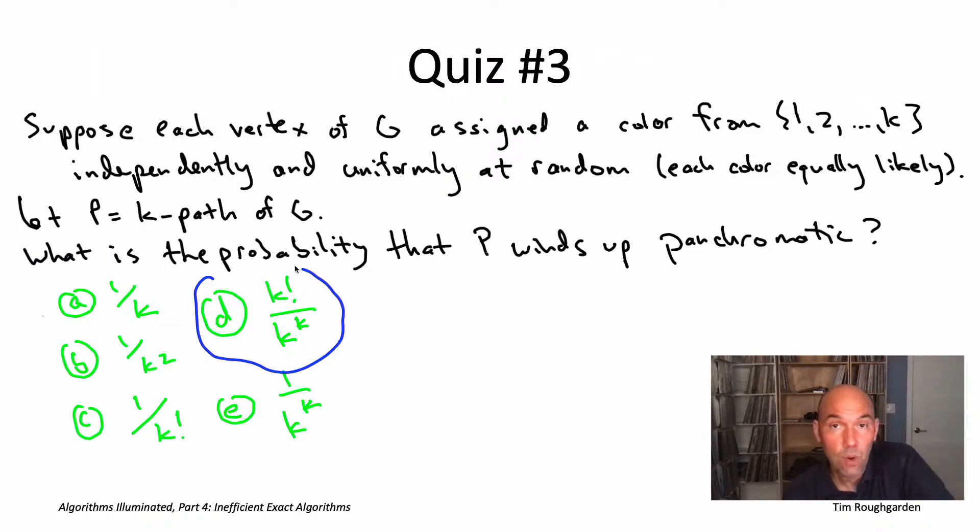Alright, so the correct answer is the fourth one, answer D: k factorial divided by k raised to the k. So let's start with the number of different things that could happen. We've got our k-path, capital P, it's got k different vertices, each of its vertices is going to be assigned a color from 1 through k uniformly at random, which means there's k different things that could happen to the first vertex of P, k different things that could happen to the second vertex, and so on, up to k different things that could happen to the kth vertex, which means there's k to the k possible colorings of the k vertices in this path capital P. And by definition, each of those is equally likely, each of the colorings happens with probability exactly one over k raised to the k.